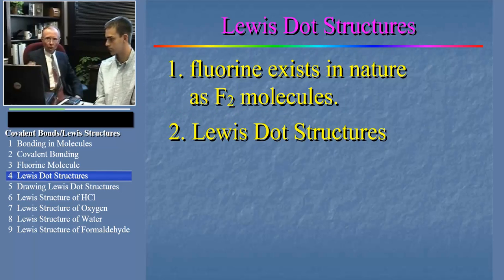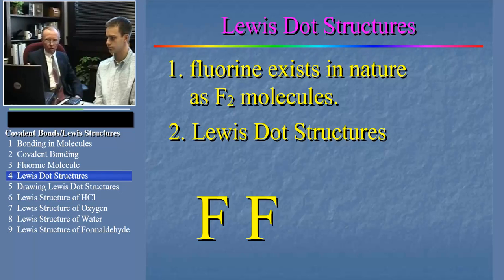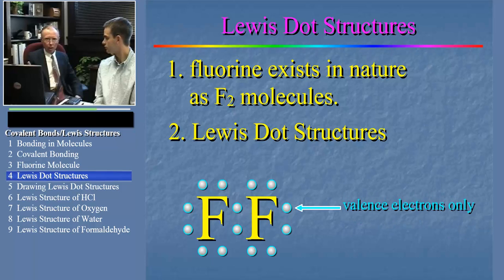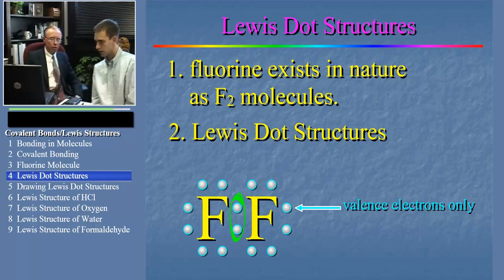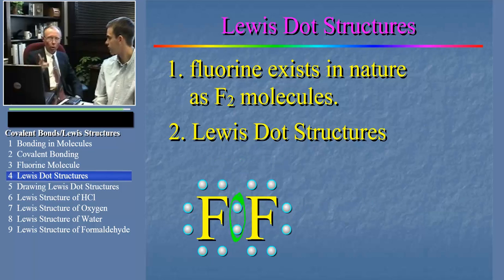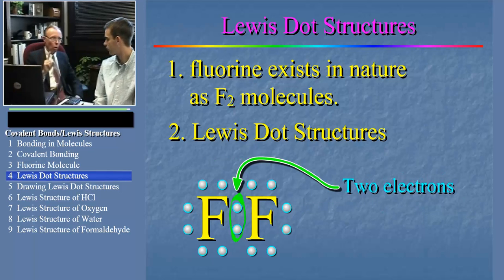Now, let's be really clear what a Lewis dot structure consists of. First, we represent each atom in the molecule by its symbol. Next, we use dots to represent all the electrons in the valence shells of the atoms and how they may be shared to form bonds. In fact, Bracken, what's special about the two electrons in between the two fluorine atoms? Those two electrons form one bond between the two atoms. There are two electrons, but they form one bond.